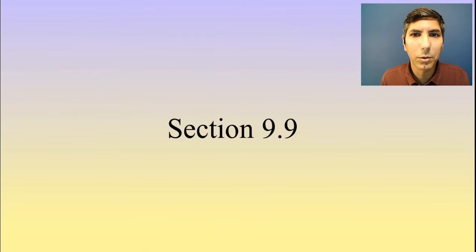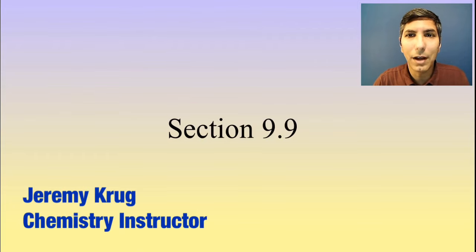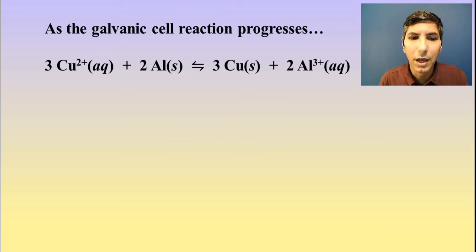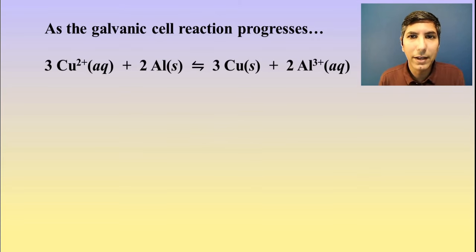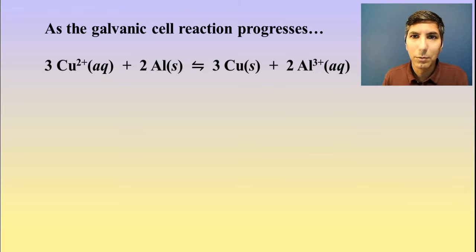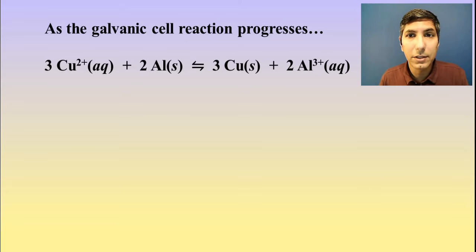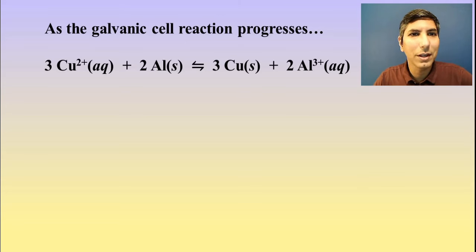Hi there, I'm Jeremy Krug, and in this video we're going to take a look at AP Chemistry Unit 9, Section 9, which is all about galvanic cells that are operating at non-standard conditions. In the last several videos we've been calculating the E-cell — the potential difference or the voltage of different galvanic cells — and in pretty much every case we've made the assumption that we're at standard conditions, which is 25 degrees Celsius, one mole per liter for solutions, and one atmosphere for any gases. That's a big assumption, because in the real world we're not always working under those ideal laboratory conditions.